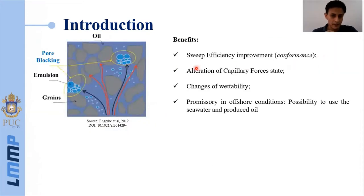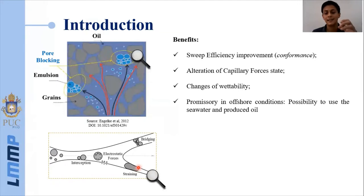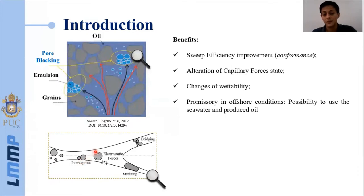Continuing with the theoretical knowledge, it is important to think about the conformance. If we zoom into this region, it is possible to talk about the droplet capture mechanisms. There are several mechanisms for this capture, but we are focused on two: mechanical entrainment known as straining — which occurs when the oil droplet size has a closer value to the pore size — and interception, which is more related to chemical interactions and is commonly associated with electrostatic forces and van der Waals interactions.